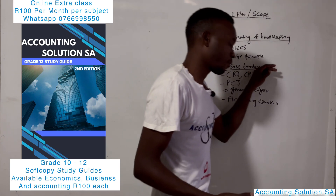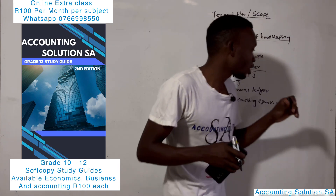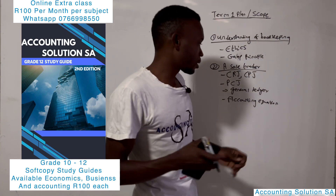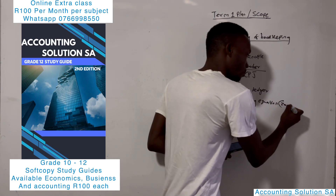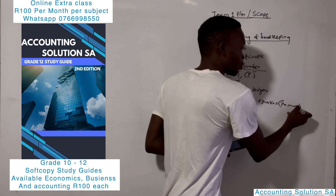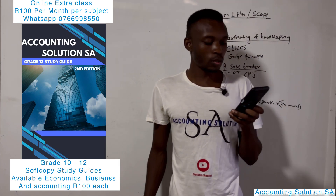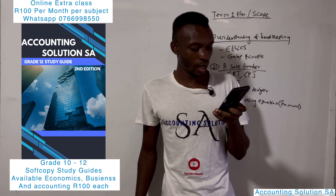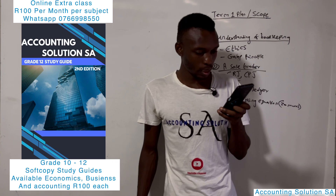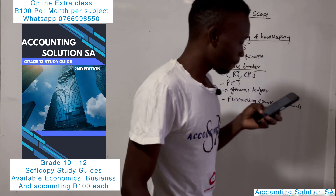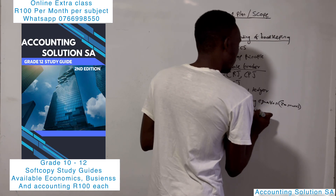These four items I have listed — there is no way you can write a test without them. The accounting equation is going to contribute almost 20 marks, so you must be prepared for it. The other item you are going to cover for this topic is the trial balance.